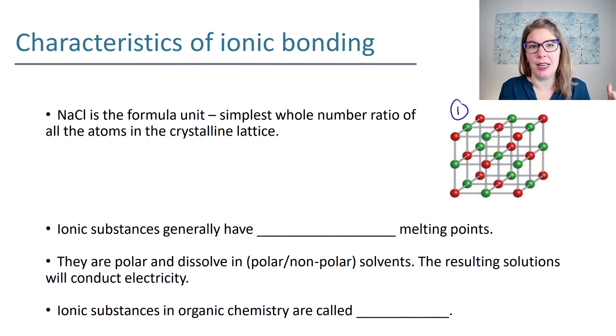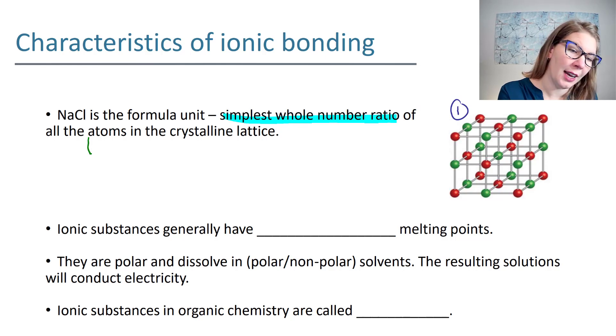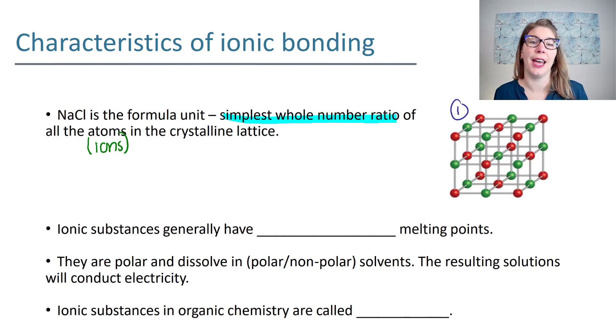But when you report sodium chloride as a general chemistry student you don't write Na52Cl52. What you do instead is you report the smallest whole number ratio of the atoms or ions in the crystal lattice. So what you're saying is I have a one-to-one ratio, one sodium for every one chlorine, and that's called a formula unit.